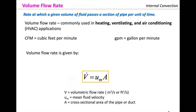Another definition to recall is the volumetric flow rate — the rate at which a given volume of fluid passes a section of pipe per unit of time. This is commonly used in heating, ventilating, and air conditioning applications, typically reported in cubic feet per minute or gallons per minute. The volumetric flow rate equals mean fluid velocity times the cross-sectional area of the pipe.